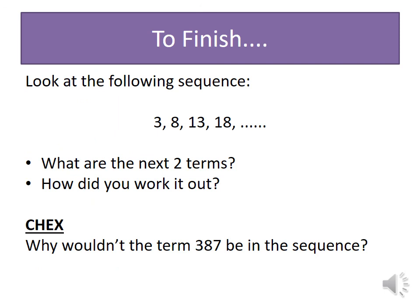Now, to finish, look at the following sequence. We have 3, 8, 13 and 18. Can you work out what the next two terms will be? How did you work it out? What's the rule? If you want to challenge yourself, have a think about this question. Why wouldn't the term 387 be in the sequence? Bring all of your answers into class and we'll have a look at them together.